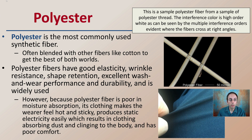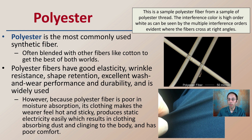Polyester is the most commonly used synthetic fiber, often blended with other fibers like cotton to get the best of both worlds. Polyester fibers have good elasticity, wrinkle resistance, shape retention, excellent wash-and-wear performance, and durability. However, polyester is poor in moisture absorption, making clothing feel hot and sticky. It also produces static electricity easily, causing dust to cling to the body. This is why it is typically blended with other fibers. Polyester thread in interference colors shows high-order white with multiple interference orders evident where fibers cross at right angles, with the scale bar representing 50 microns.